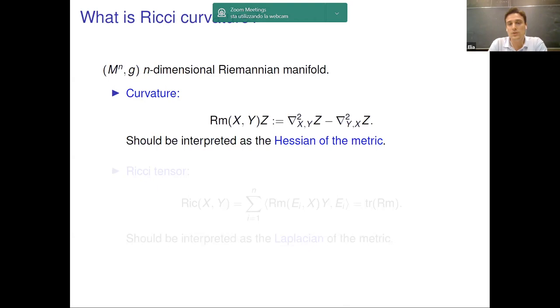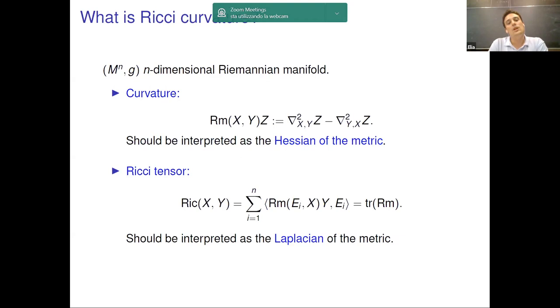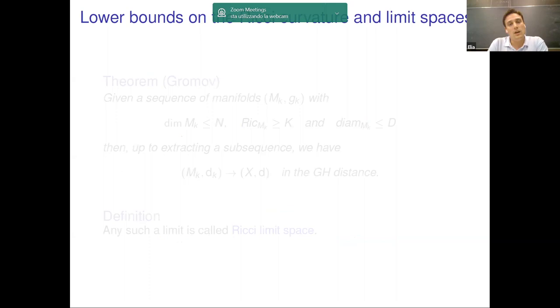The Ricci tensor is then obtained by tracing out the curvature tensor, and having in mind the interpretation of the curvature tensor as the Hessian of the metric, it is quite natural to interpret the Ricci tensor as the Laplacian of the metric. The Ricci tensor plays a very important role in geometrical analysis. It is of special importance the class of manifolds with a lower bound on the Ricci curvature. There are indeed several analytical and structural results for this class of manifolds, and one of these results is of particular interest for my talk.